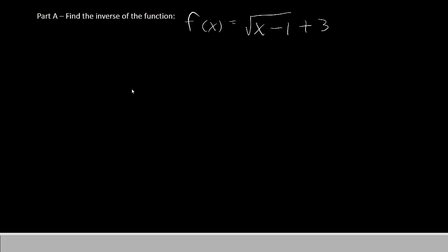Part A of our problem is to find the inverse of the function f(x) equals the square root of (x minus 1) plus 3. The first thing I'll do is simply replace the f(x) with y, so our function is y equals the square root of (x minus 1) plus 3.